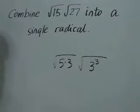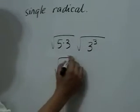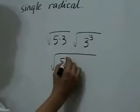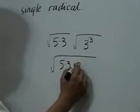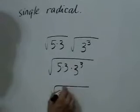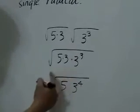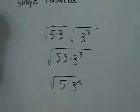Next, we apply the law of radicals and write this as the square root of 5 times 3 times 3 cubed, or square root of 5 times 3 to the 4th. 3 times 3 cubed is 3 to the 4th.